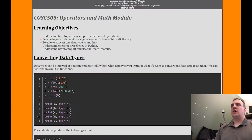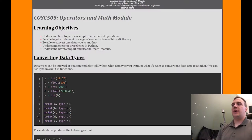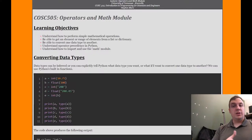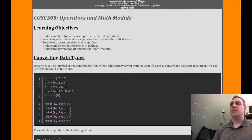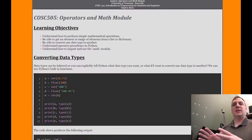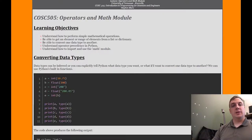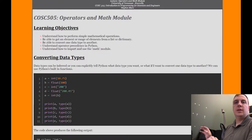The objectives of this lecture are: to understand how to perform simple mathematic operations; be able to get an element or range of elements from a list or dictionary; be able to convert one data type to another; understand operator precedence in Python — parentheses, power/exponent, multiply, divide, add, subtract, the 'please excuse my dear aunt Sally' principle; and understand how to import and use the math module. There are operators not intrinsic to Python, so someone else wrote how to do sine, cosine, tangent, and we use the math module to access that code.